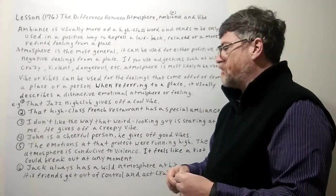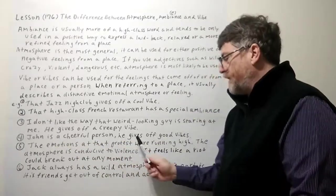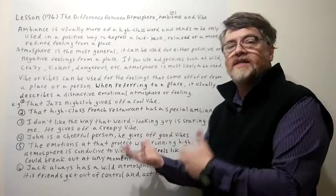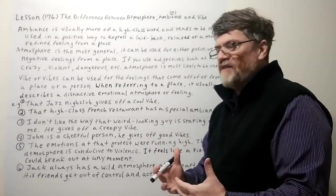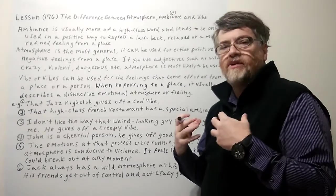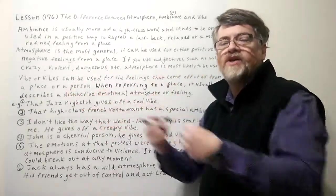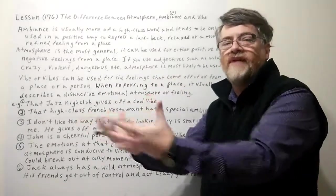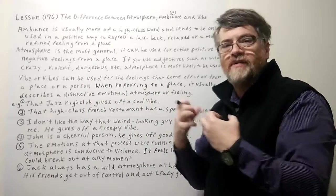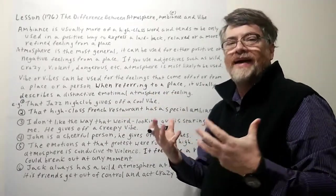The fourth example: 'John is a cheerful person. He gives off good vibes.' Vibes can be positive or negative, and the feeling is almost like something the place or person is emitting. That's why we say someone gives off vibes — you can almost feel the energy emitting from them. That's what we mean by vibe, whereas atmosphere and ambiance are more about the general feeling around a whole area.